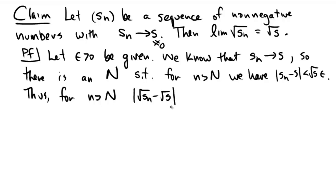Well, multiply the top and the bottom here by a conjugate: radical Sn minus radical S, and multiply top and bottom by radical Sn plus radical S. That would yield on the top Sn minus S, and on the bottom we would have radical Sn plus radical S.